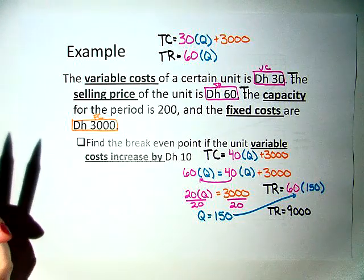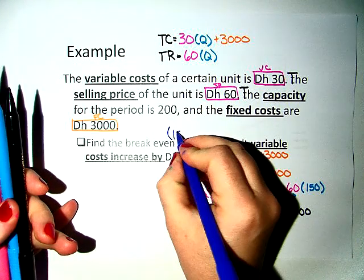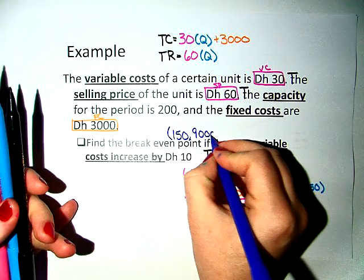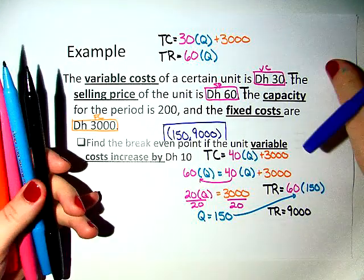So in order to find the break-even point, the break-even point would be 150, 9,000. Looking at my units and my dirhams.